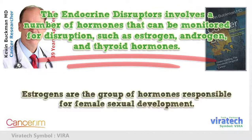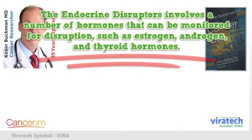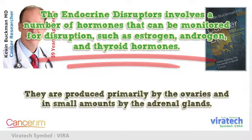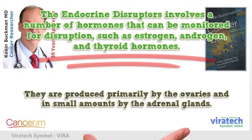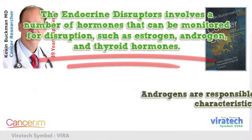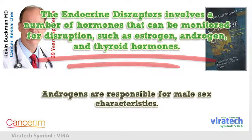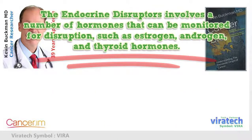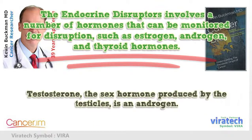Estrogens are the group of hormones responsible for female sexual development. They are produced primarily by the ovaries and in small amounts by the adrenal glands. Androgens are responsible for male sex characteristics. Testosterone, the sex hormone produced by the testicles, is an androgen.